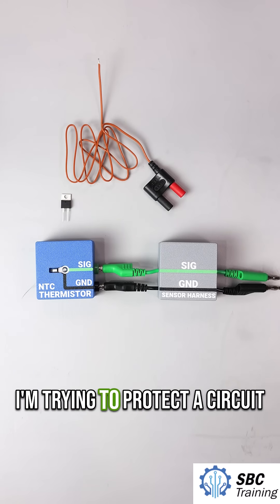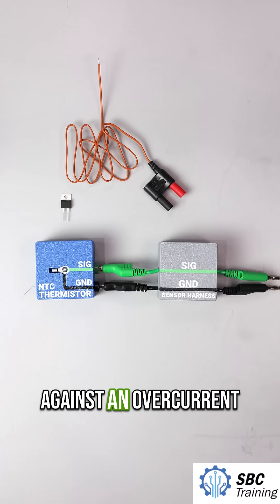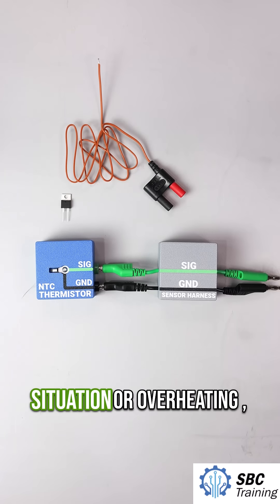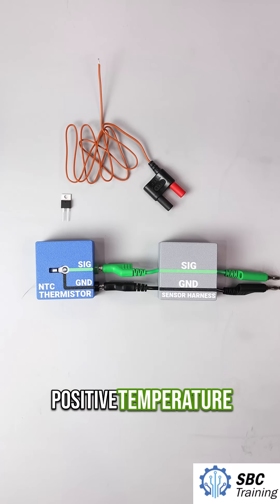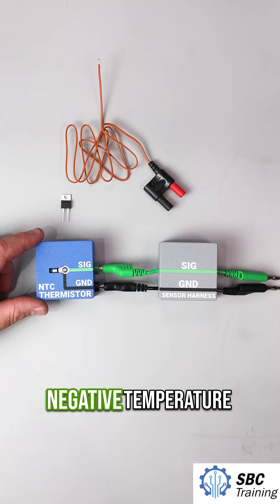Anytime that I'm trying to protect a circuit against an overcurrent situation or overheating, that's almost always a positive temperature coefficient thermistor.